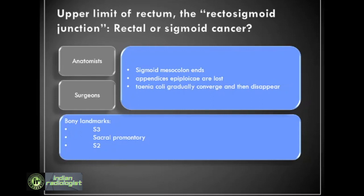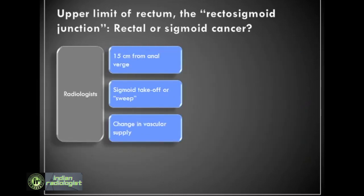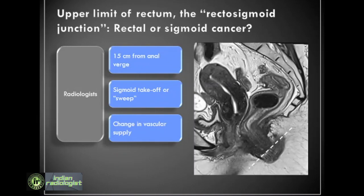Several features defining the rectosigmoid junction or transition are variously accepted by different radiologists. The most commonly used landmark for radiologists is 15 cm from the anal verge. This is a sagittal T2-weighted MRI and I have marked the anal verge by a wide dashed line. This is the point where the anal mucosa gives way to the perianal skin. The rectum is not in a single vertical plane — it has several curves along its length and in general follows the sacral concavity. 15 cm from the anal verge is calculated along this curved long axis of the rectum.